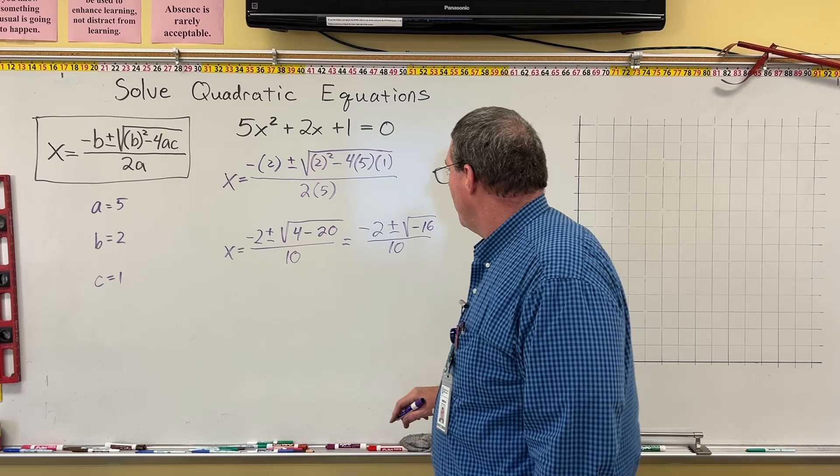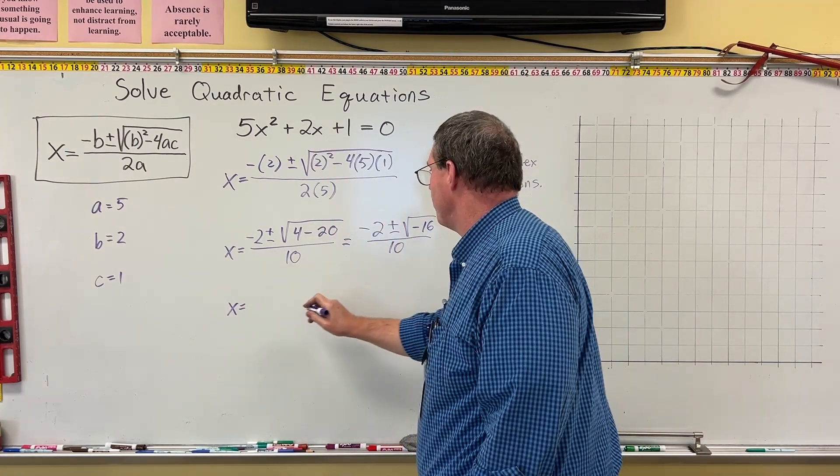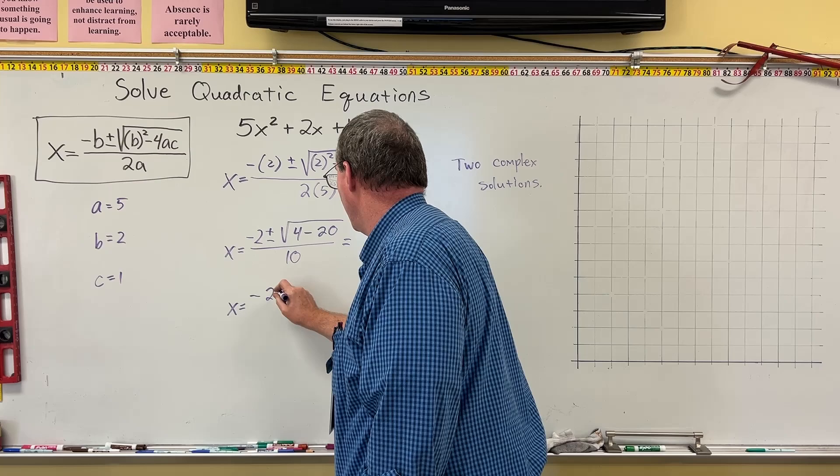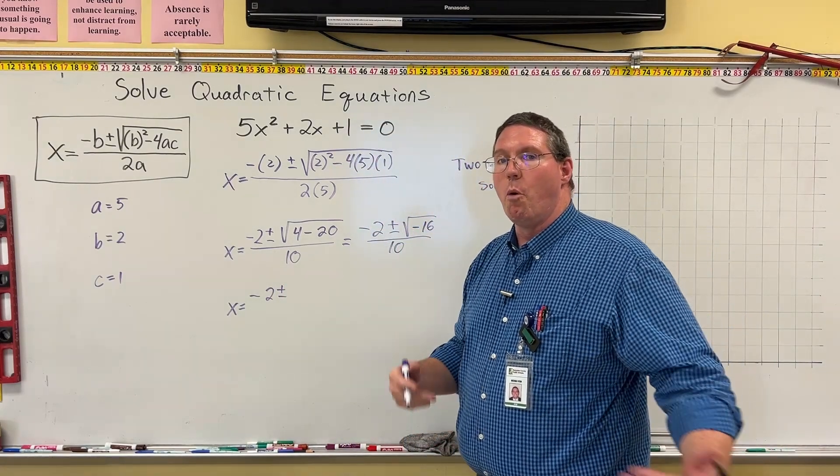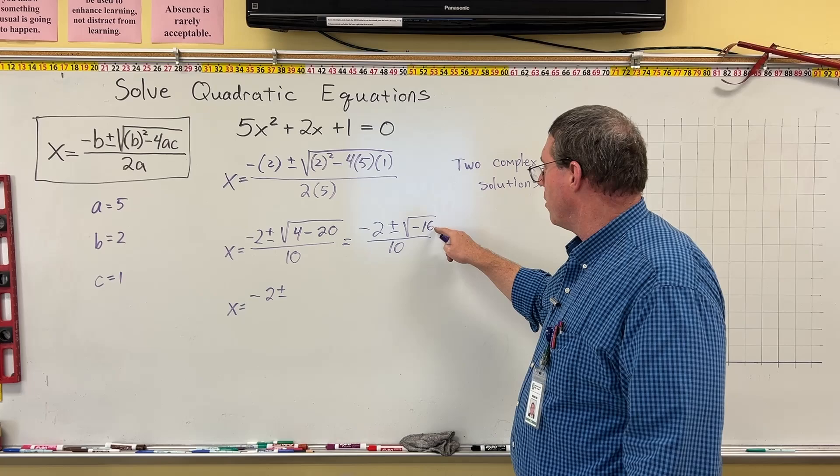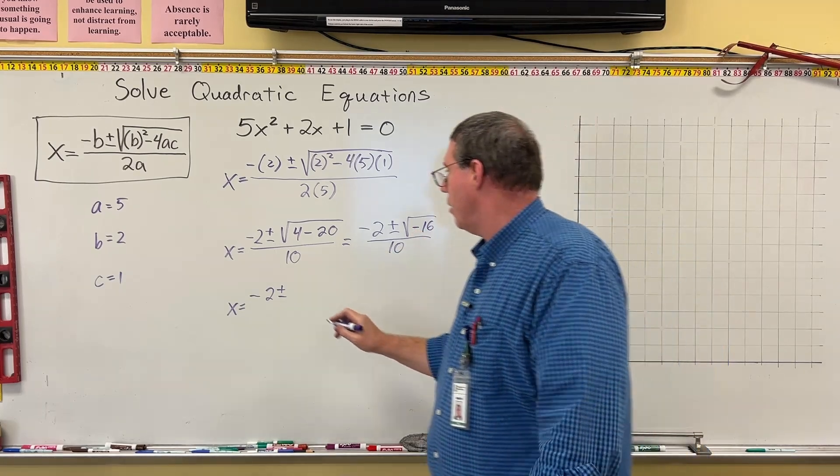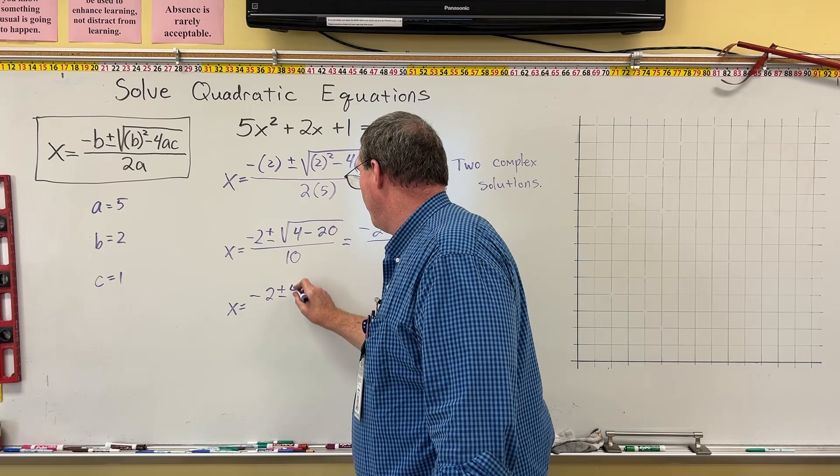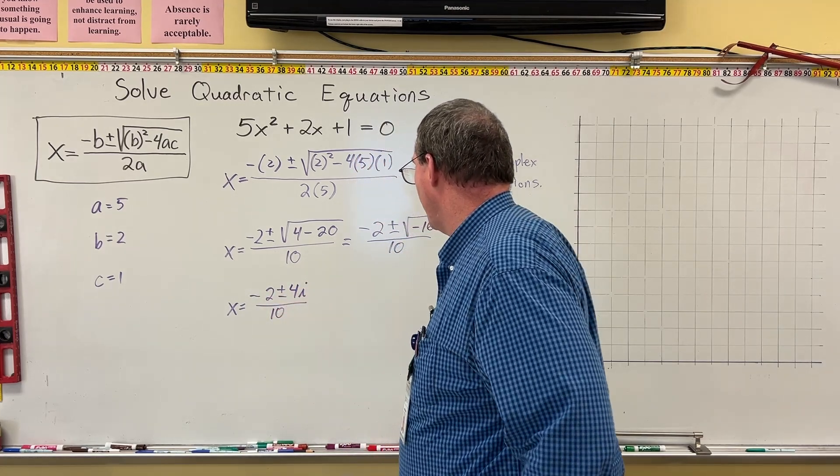Now, what I can now say is that x is equal to negative 2, plus or minus: Now, look at this. The square root of negative 16 is 4i, because the square root of 16 is 4, and the negative under there means we put an i on. So it's plus or minus 4i all over 10.